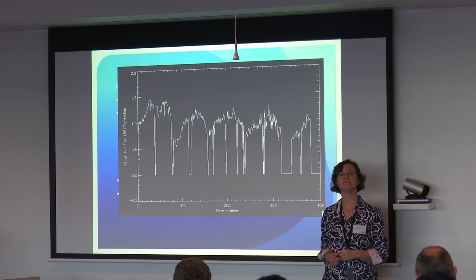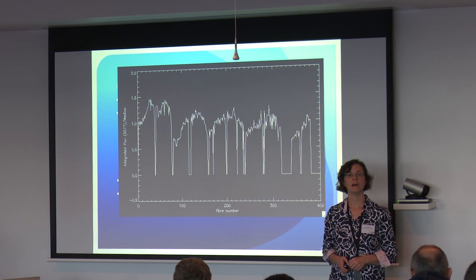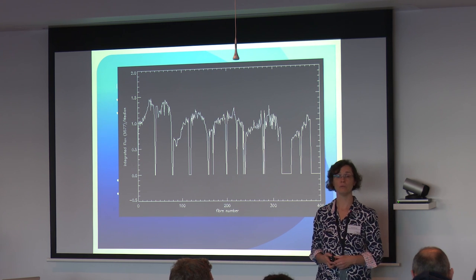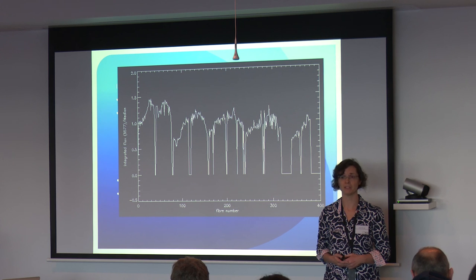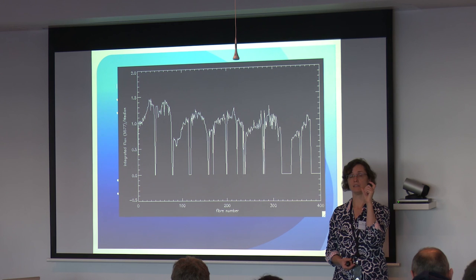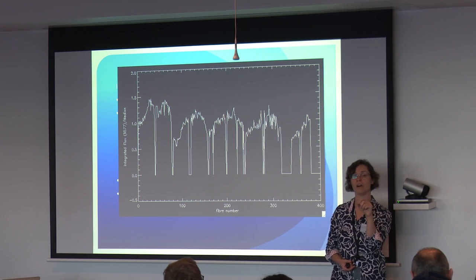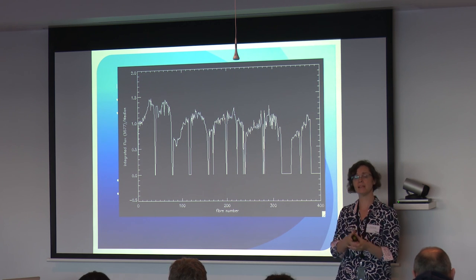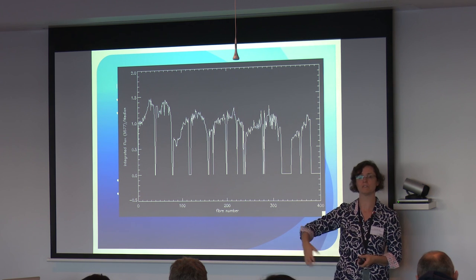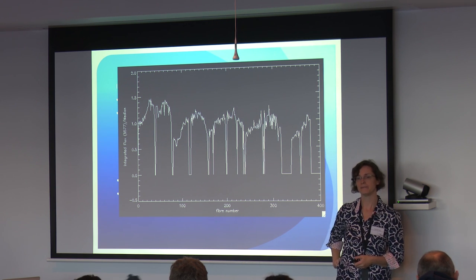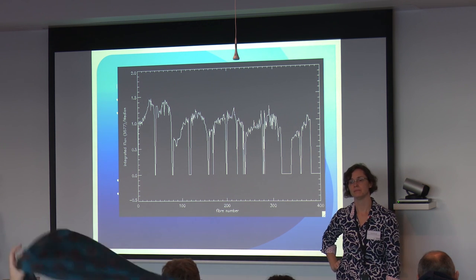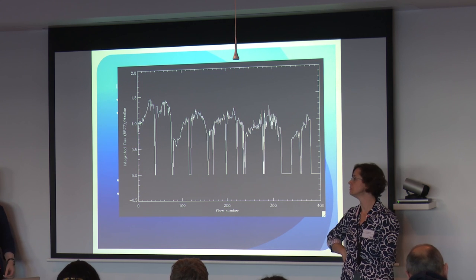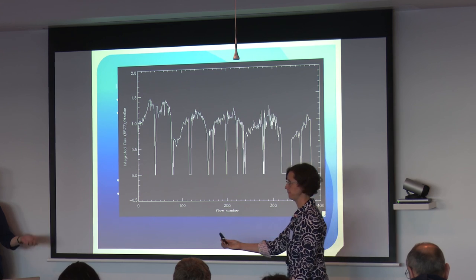Last quick question about individual bundle size. For SAMI, each bundle is 61 fibers, each fiber is 1.5 arcseconds across, giving about 16 arcseconds across the bundle. You have 13 bundles on a 1-degree field of view. For NIFS, it has a roughly 3-arcsecond field of view. Thank you very much, Sarah. Are you going to be around for lunch for questions? Great, thank you very much.